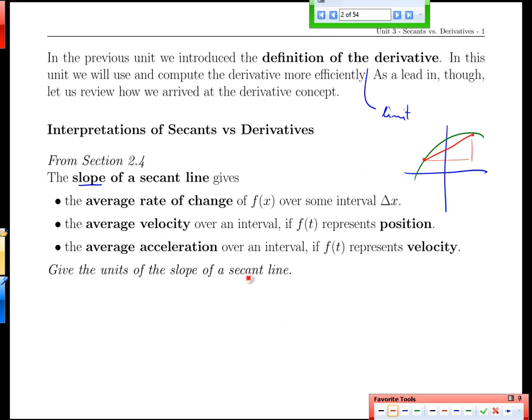The units of the slope of a secant line depend on the inputs of the original graph. If we had meters for distance and time in seconds, then the slopes would be in terms of meters per second. We take the vertical axis and divide by the units of the horizontal axis because the slope is the amount of change in meters divided by the amount of change in time.